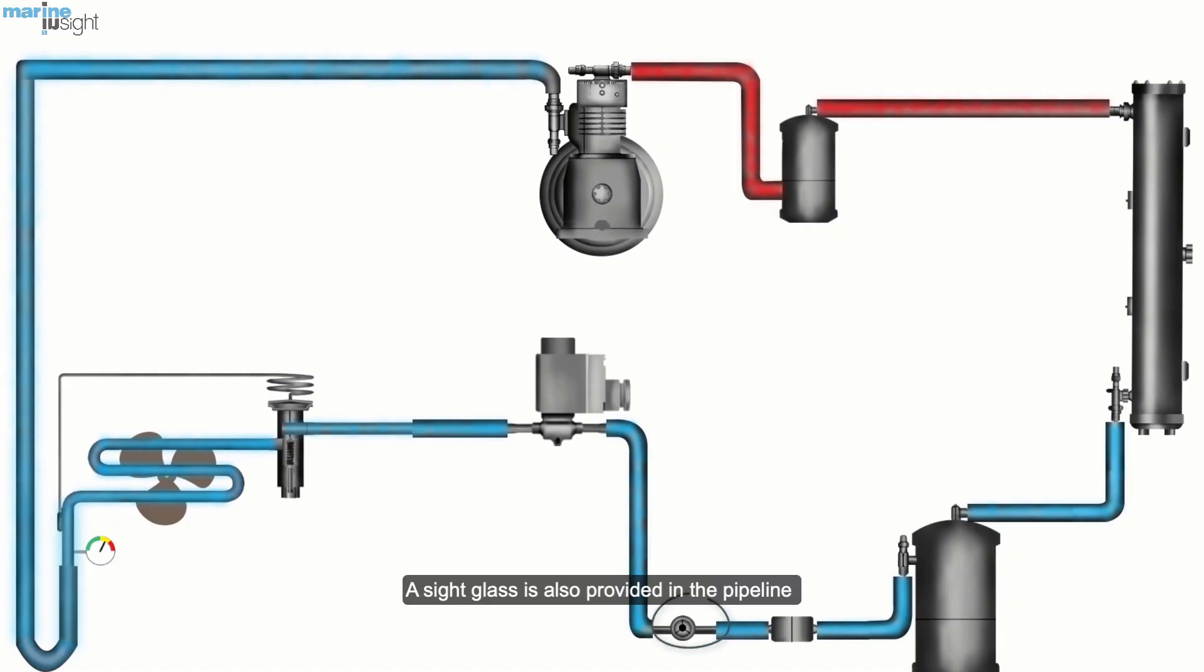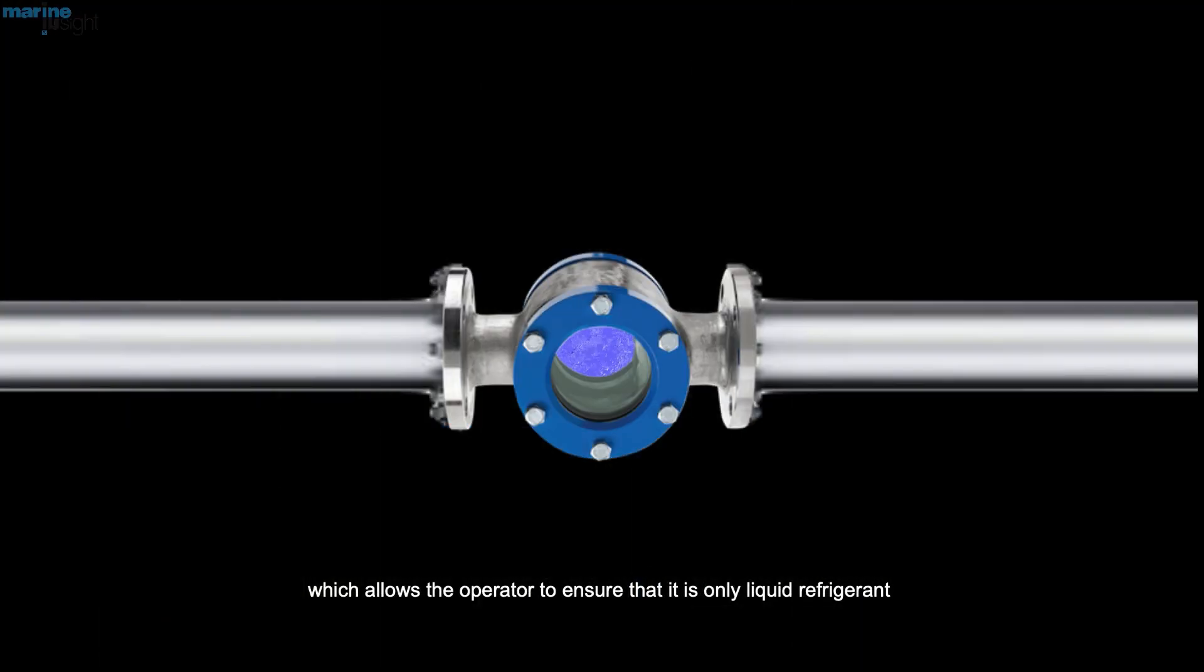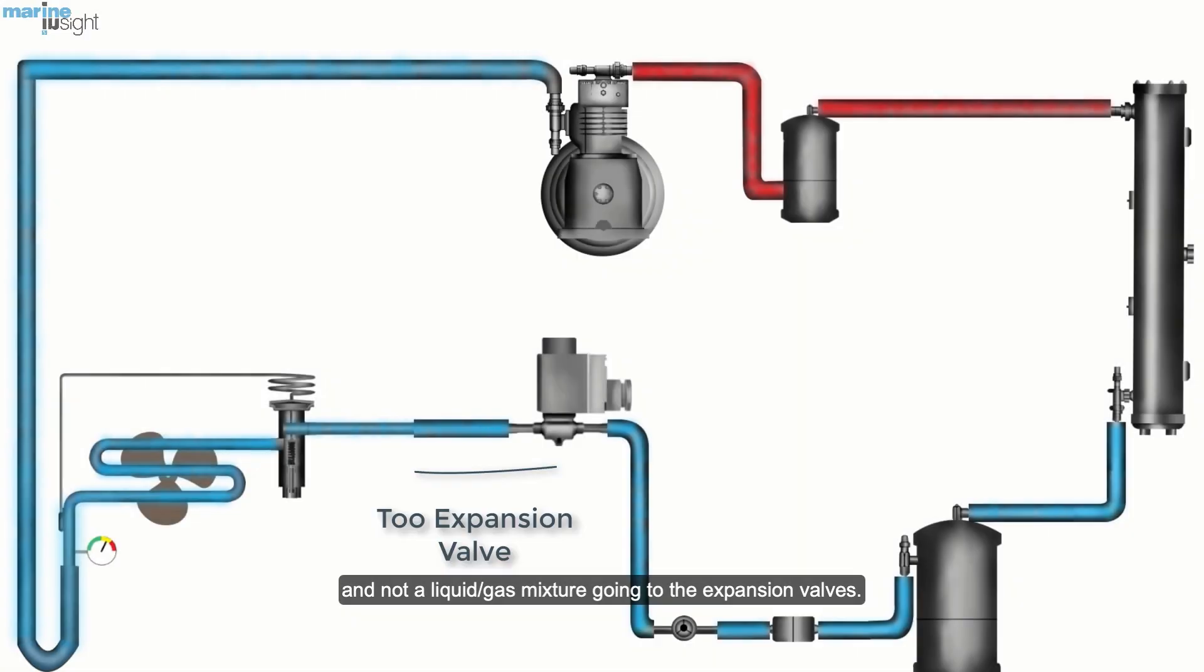A sight glass is also provided in the pipeline, which allows the operator to ensure that it is only liquid refrigerant and not a liquid gas mixture going to the expansion valves. On some designs, a water indicator is incorporated.